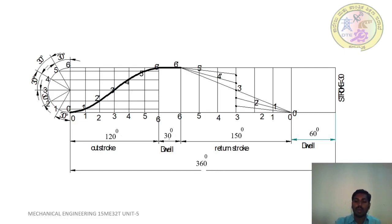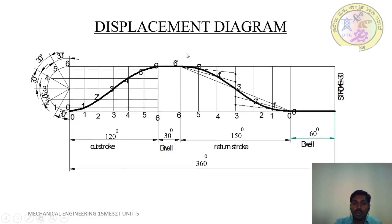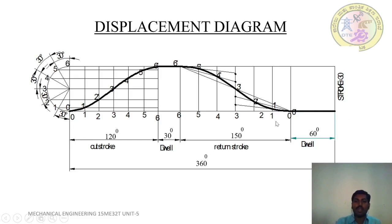The outstroke is Simple Harmonic Motion. For the return stroke, draw a curve using Uniform Acceleration and Retardation, passing through points 6 dash, 5 dash, 4 dash, 3 dash, 2 dash, 1 dash, 0 dash. After 0 dash, draw a straight line for the remaining dwell period.